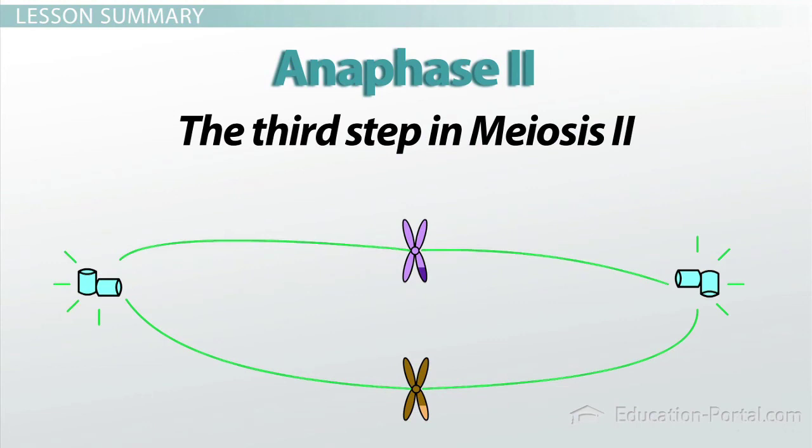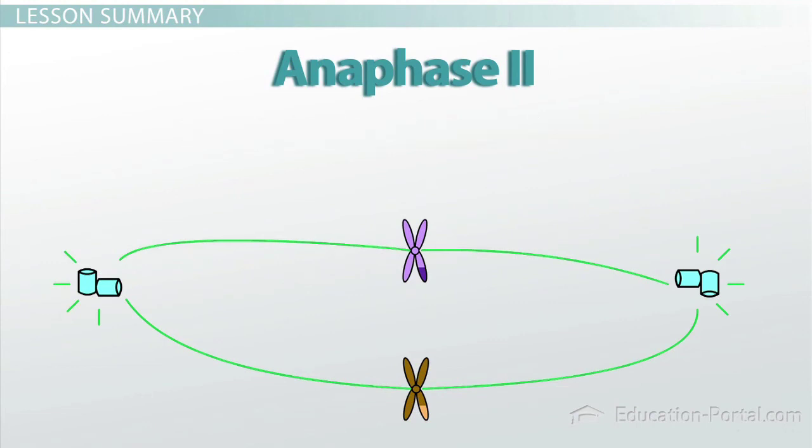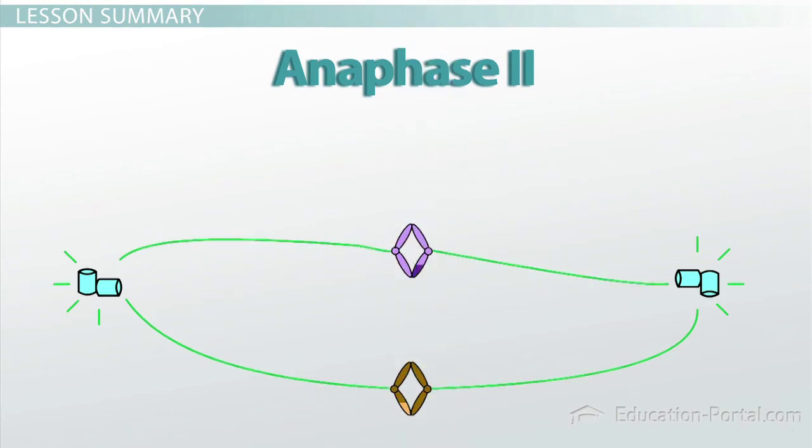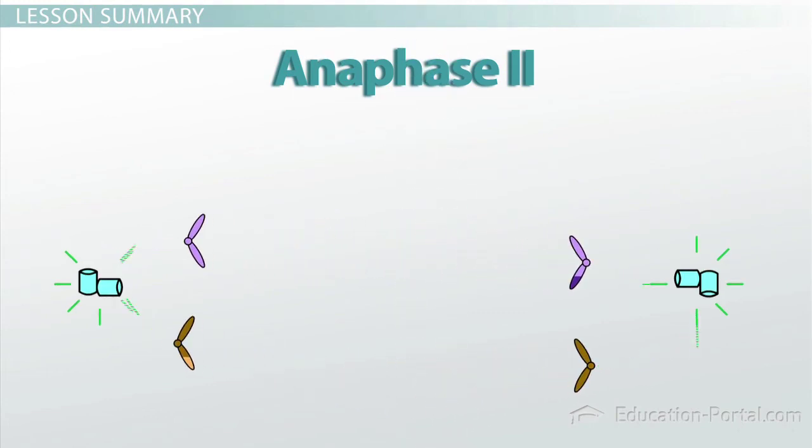Anaphase II is the third step in meiosis II. During anaphase II, the physical connection between sister chromatids is broken, allowing them to move toward the spindle poles.